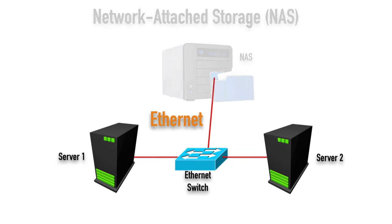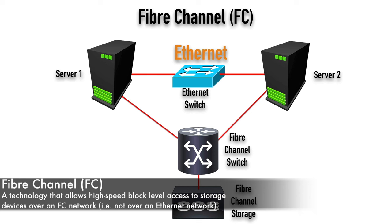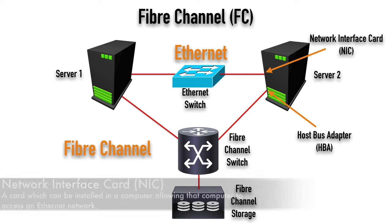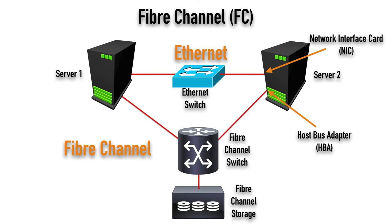We can get some dramatic performance improvements by using something called Fiber Channel, which you see in lots of large enterprise storage area networks. Fiber Channel does allow us to do block-level storage — much more efficient than file-level storage. In this example, we've got Ethernet at the top of the screen and Fiber Channel at the bottom. Notice the servers have a couple of connections going out. For example, Server 2 connects to the Ethernet switch using a NIC, a network interface card. But to connect to the Fiber Channel switch, it uses something called an HBA, a host bus adapter. This creates additional expenses and additional wiring requirements — we've got to have two connections out, one for the LAN and one for the SAN. But Fiber Channel does give us very high-speed access to our data.